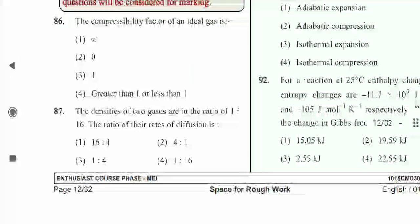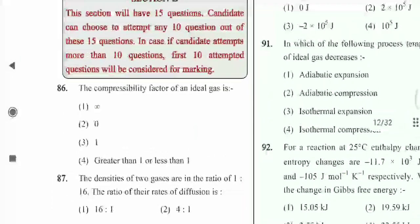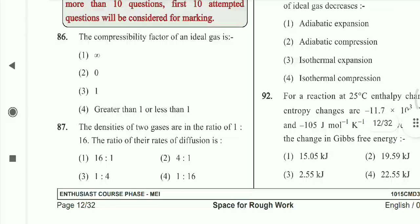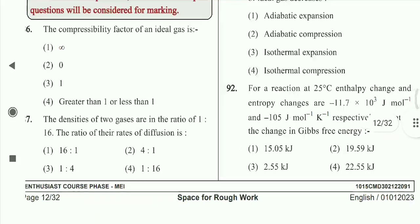Question 86: The compressibility factor of an ideal gas is 1. Question 87: The densities of two gases are in the ratio of 1:4; the ratio of their rates of diffusion is 2:1 — option 2nd is correct.